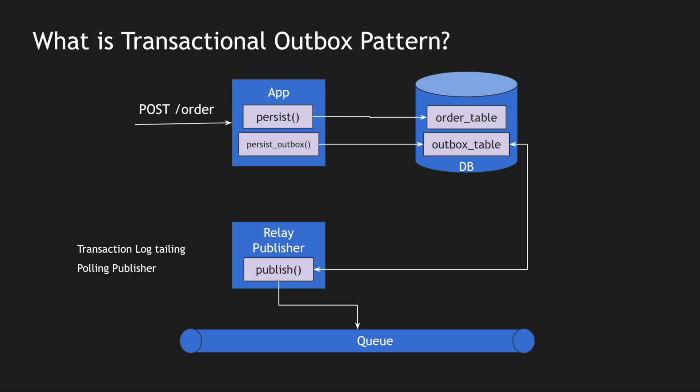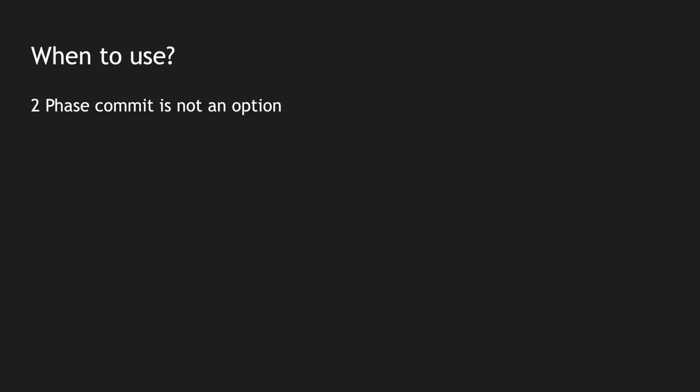Now that we know what the transactional outbox pattern is, when should you use it in production? Use this pattern when two-phase commit is not an option. Two-phase commit is a pattern where you maintain transactionality between two different phases — if the second phase fails, you roll back the first. In our case, the queuing system is completely different from the database and follows a different state mechanism, so two-phase commit is not an option.